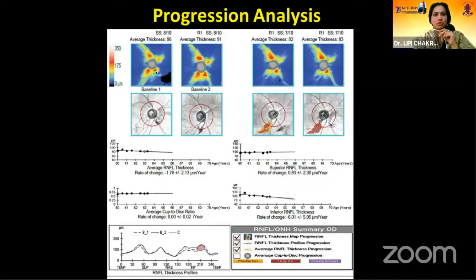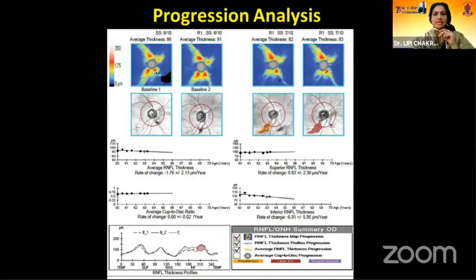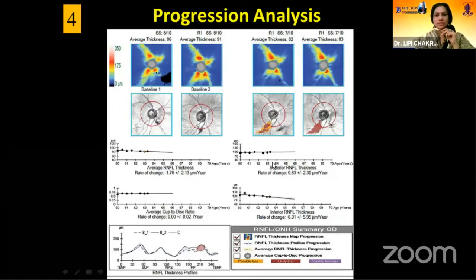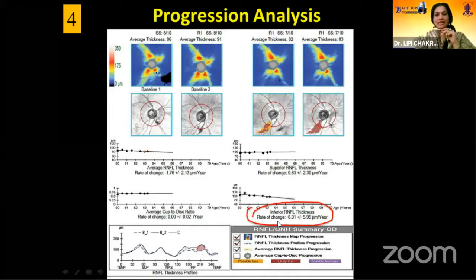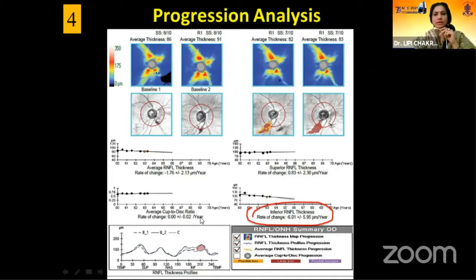Progression analysis is the fourth component where OCT is used. Increasingly, this is applicable in early and moderate glaucomas, not in severe glaucomas. These are the two baseline reports, and signal strength needs to be checked on all visits. The warmer colors are disappearing in the later stages and in the significance map we are getting some red zone. The inferior RNFL thickness slope is plotted and found to be declining — the rate of change is minus 6.01. Note that CDR is almost stable with a rate of change of 0.00. So this might be progression.